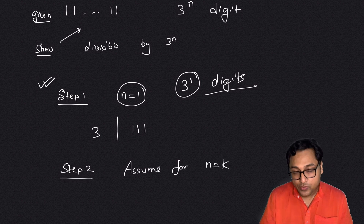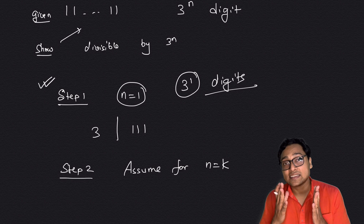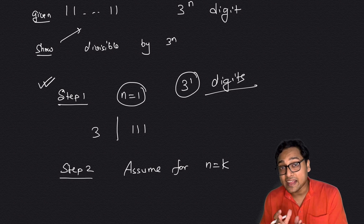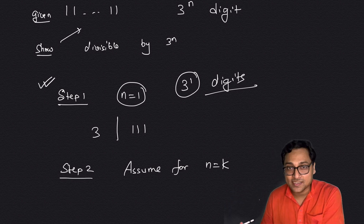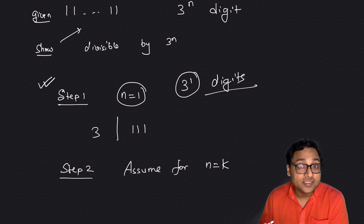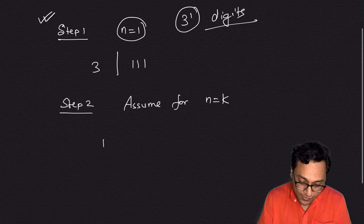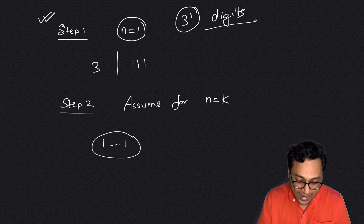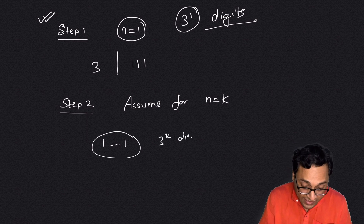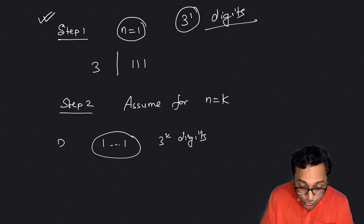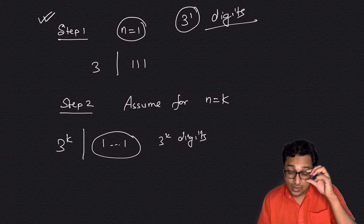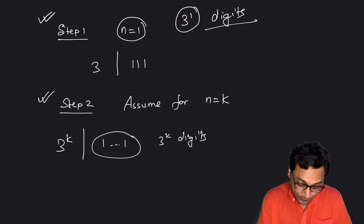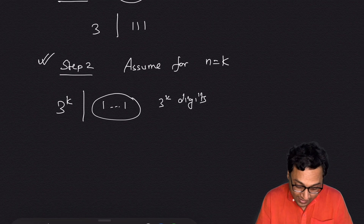Step 2: assume for n equals k. This means if there are 3-to-the-power-k digits — a repunit of 1s with 3^k digits — then assume that number is divisible by 3 to the power k. That's the induction assumption. Nothing to prove here.